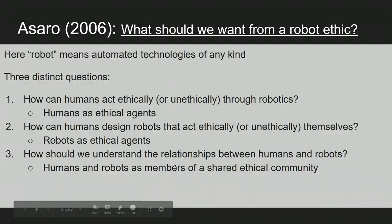I want to start with this paper from Peter Saro in 2006, which is before the recent boom in AI. During this period there was a lot of discussion about computer ethics, AI ethics, and robot ethics. But the discussion was fairly unfocused, maybe a little enamored with science fiction scenarios about near-human robotics and how we would tell the difference between a robot that deserves ethical consideration and one that doesn't.